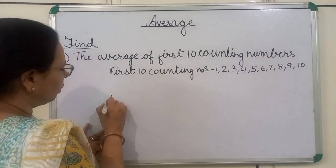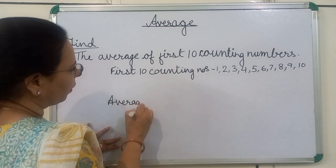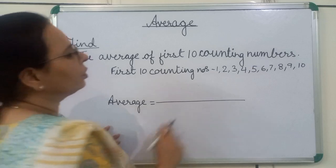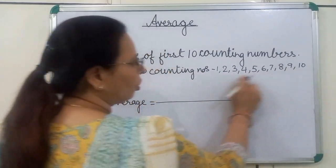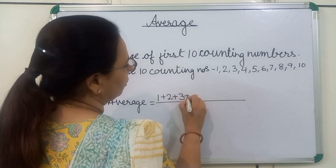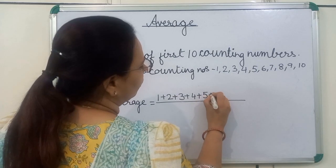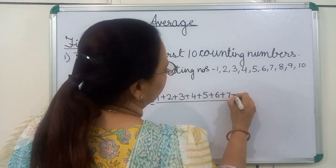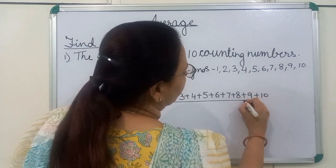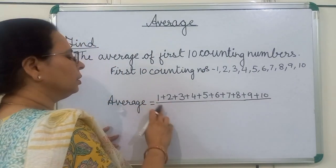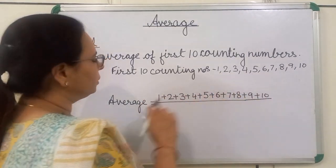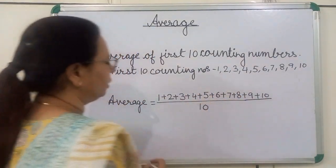So, what is the formula of average? Average is equal to sum of numbers. So here, we will write all these numbers: 1 + 2 + 3 + 4 + 5 + 6 + 7 + 8 + 9 + 10, upon sum of addends. So, how many addends are here? 10. We will write here 10.